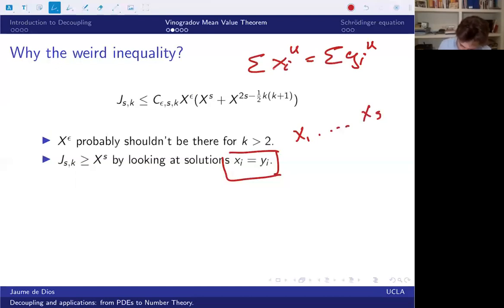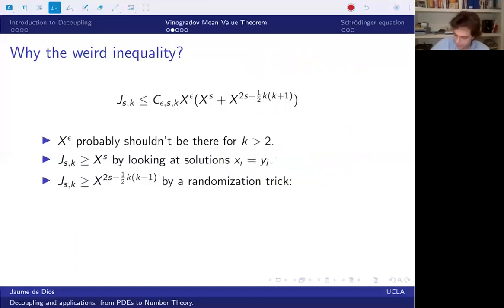And then the weird term, the complicated term is this one. I can't show you why, but I can give you a very compelling argument. It's a randomization argument. The real argument is just a rigorous version of this argument. So what we're going to do is we're going to pick the x's and the y's at random so that we have X to the 2s choices. And then we're going to ask ourselves what's the probability that if we make a choice, then all the equations actually hold. And then by using this probability, we will kind of get an estimate on how many solutions there should be.